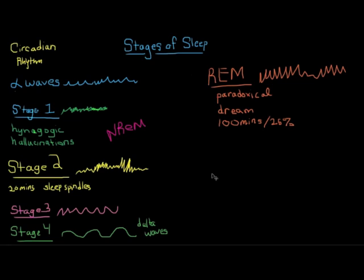REM stands for rapid eye movement. If you look at somebody in REM sleep and look at their eyes, you'll see lots of movement beneath their eyelids. If you looked at an EEG, you'd see that their brain waves almost look like they're awake — there's lots of brain activity. REM sleep is when you dream. We spend about 25% of our night in REM sleep.